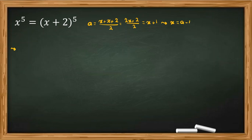And if we rewrite our main equation, it will be a minus 1 to the power of 5 equal to a minus 1 plus 2, which is a plus 1 to the power of 5.